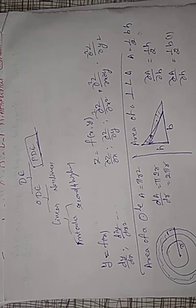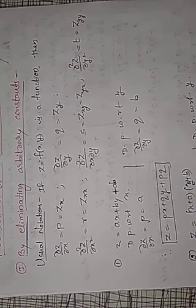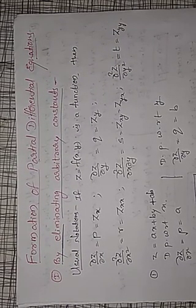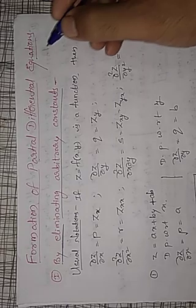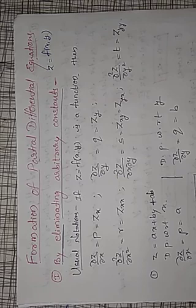In the formation of partial differential equations there are two types. One type is where a differential equation contains only arbitrary constants — say A and B. By eliminating these arbitrary constants we can form the differential equations. Sometimes z depends on a function of x and y; then we eliminate that function to form the partial differential equations. Throughout this module we consider z as a function of x and y.